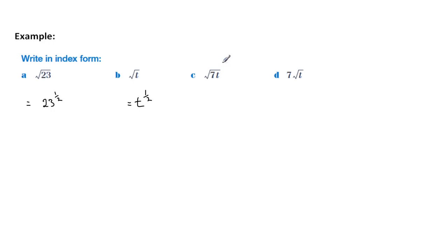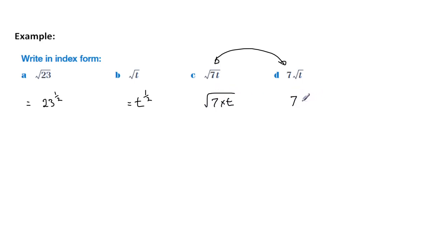It's very important to look at the difference between these two expressions. In the first one, the 7 is multiplied by t and is inside the square root sign. Whereas in the second one, we've got 7 outside the square root sign, so it's only the t that has the square root. So when we work the first one out, the whole thing — that's 7 times t — is to the half.